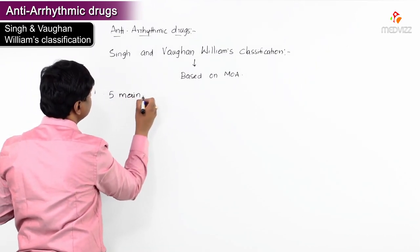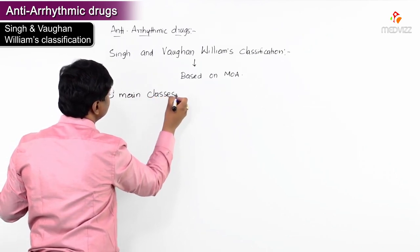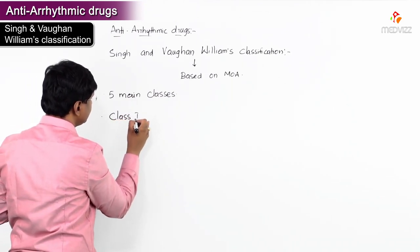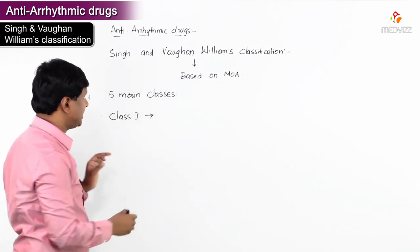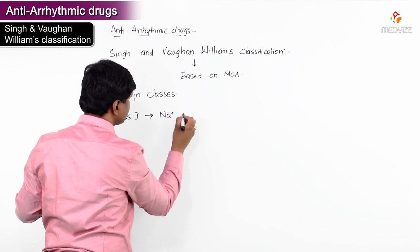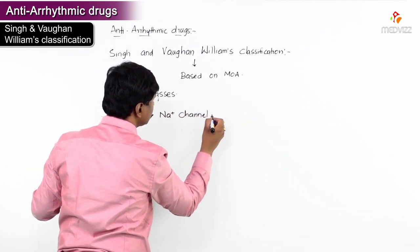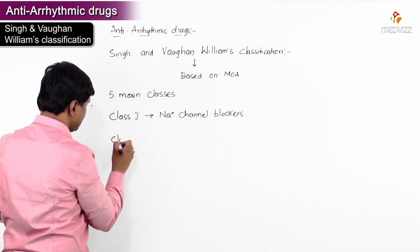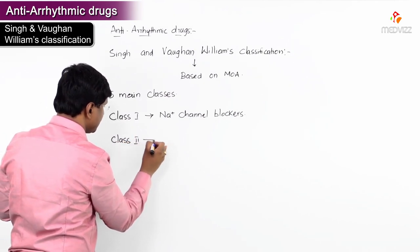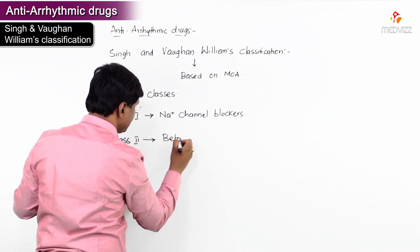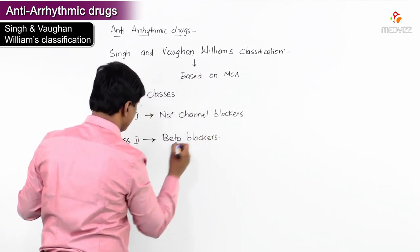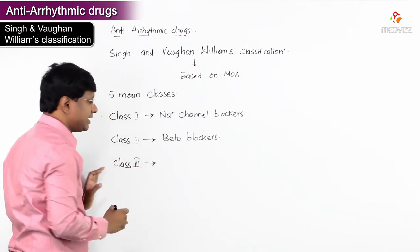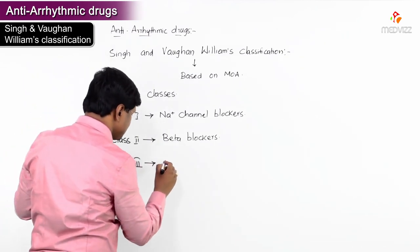There are totally five main classes. Class 1 anti-arrhythmic drugs are sodium channel blockers. Class 2 anti-arrhythmic drugs are beta blockers. Class 3 anti-arrhythmic drugs are potassium channel blockers.